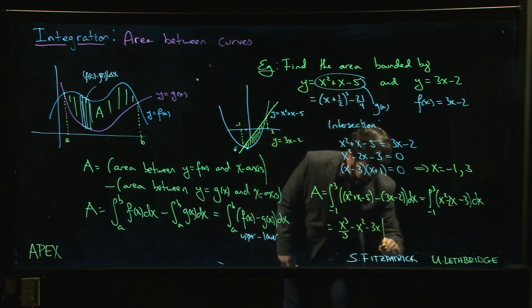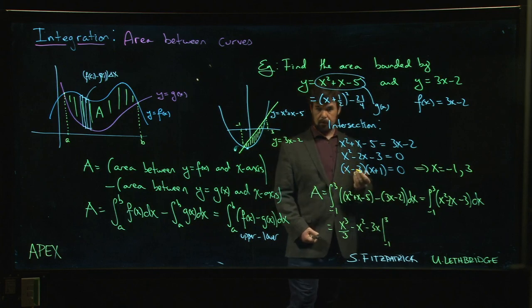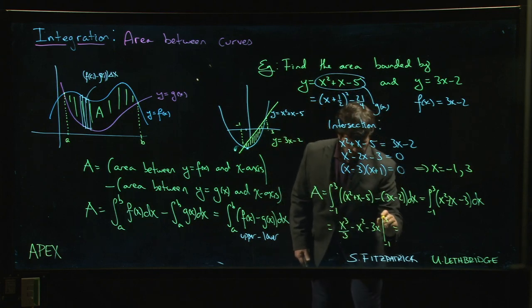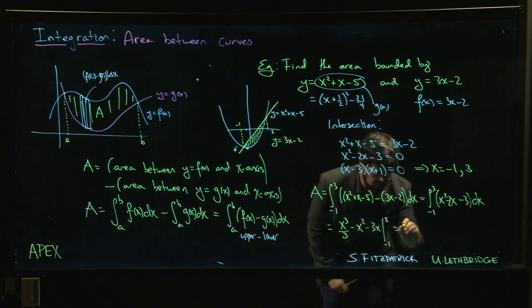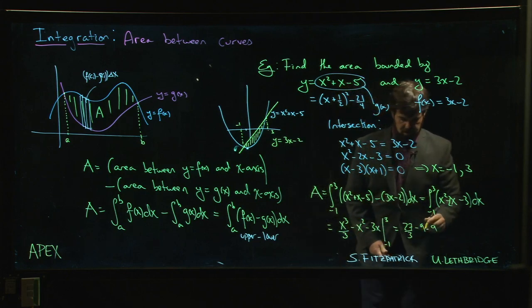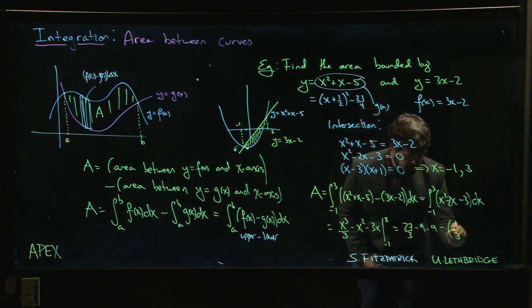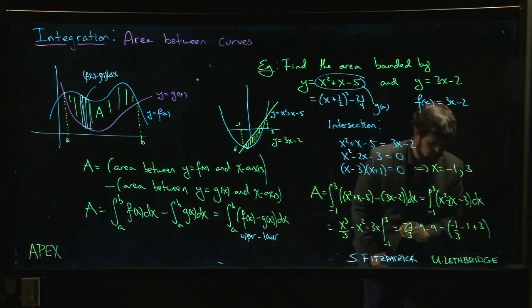And we're going from -1 to 3. So we plug in the limits, upper limit first. We have 27/3 - 9 - 9. Now we put in the lower limit: -1/3 - 1 + 3.